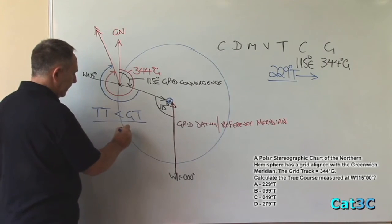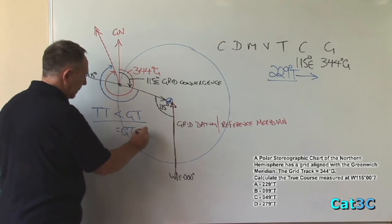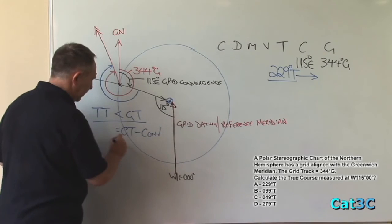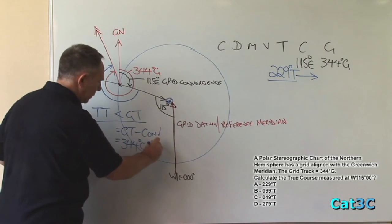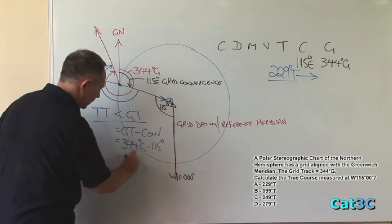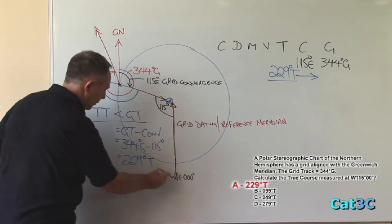So the value of the true track equals 344 degrees grid minus 115 degrees equals 229 degrees true.